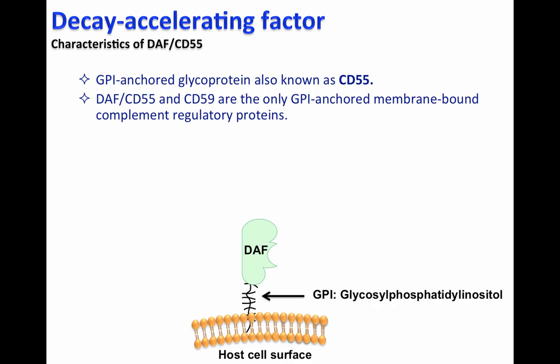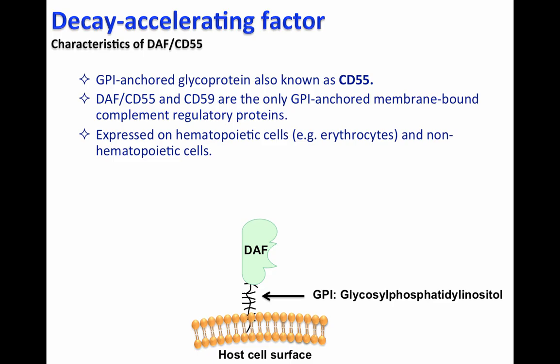DAF, together with CD59 — which is covered in another video — are the only GPI-anchored membrane-bound complement regulatory proteins. DAF is expressed on hematopoietic cells such as erythrocytes, and also on non-hematopoietic cells.